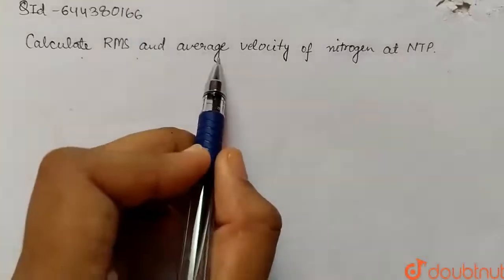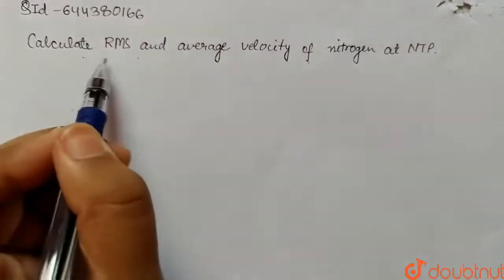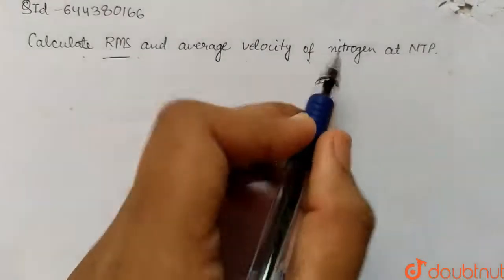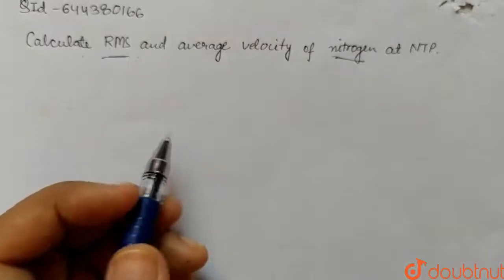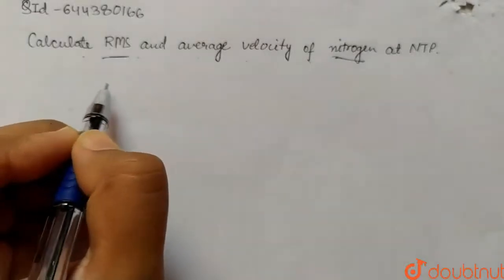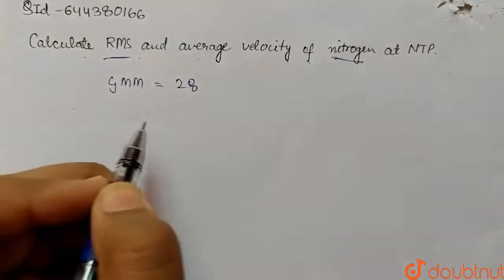Calculate RMS and average velocity of nitrogen at NTP. So we have to calculate RMS, that is root mean square, and average velocity of nitrogen at NTP. Here we have nitrogen which has the GMM as 28.